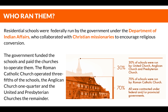Residential schools were federally run by the government under the Department of Indian Affairs, who collaborated with Christian missionaries to encourage religious conversion. The government funded the schools and paid the churches to operate them. 70% of the schools were run by the Roman Catholic Church, while the other 30% were run by the Anglican Church, United and Presbyterian churches.